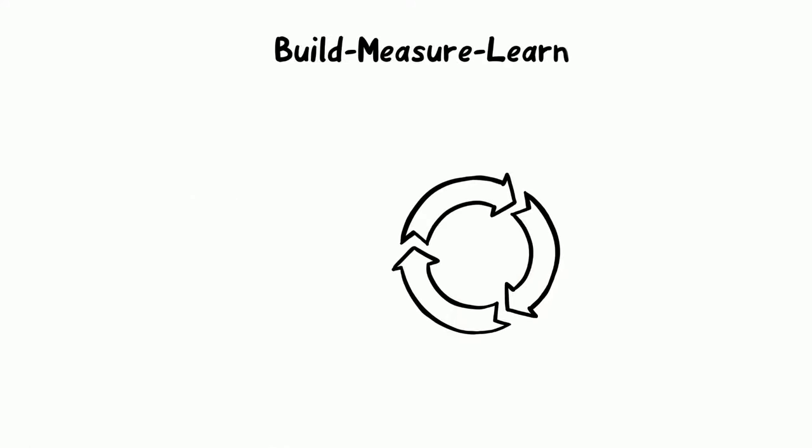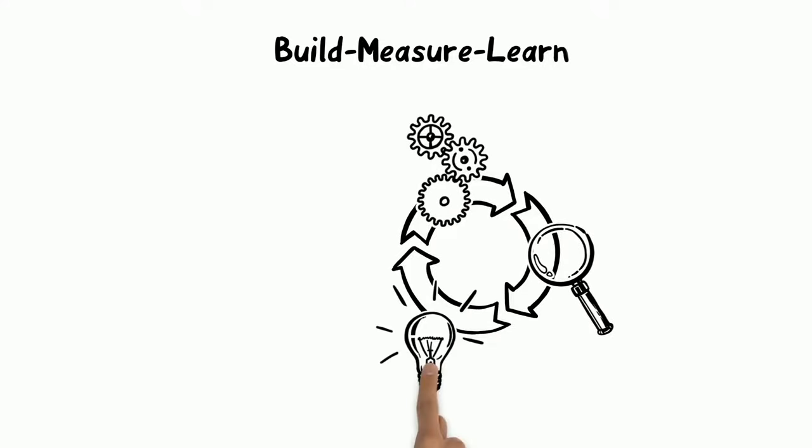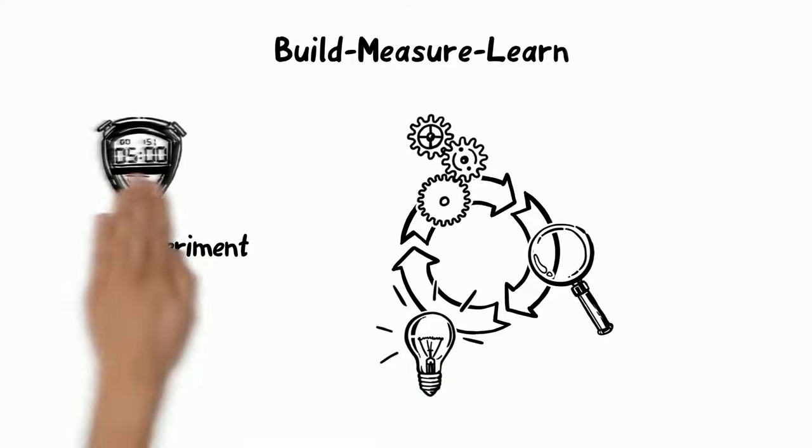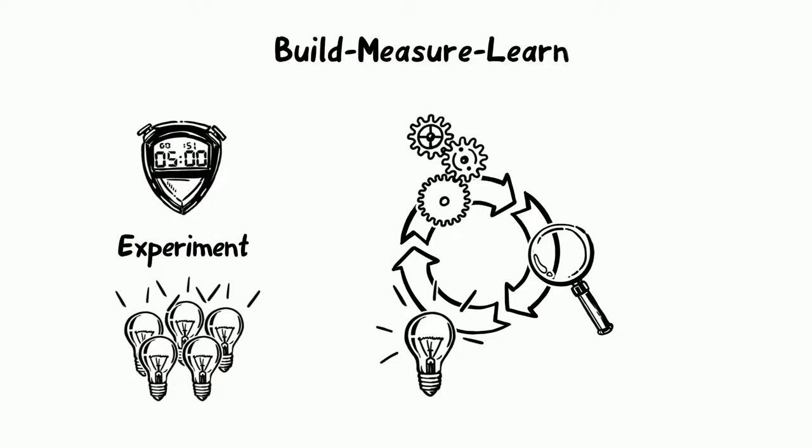This is also reflected in the so-called Build-Measure-Learn cycle, in which a small product is built and data are then measured, which the development team can learn from. This cycle is known as an experiment. The aim is to carry out experiments as quickly as possible in order to learn as much as possible.